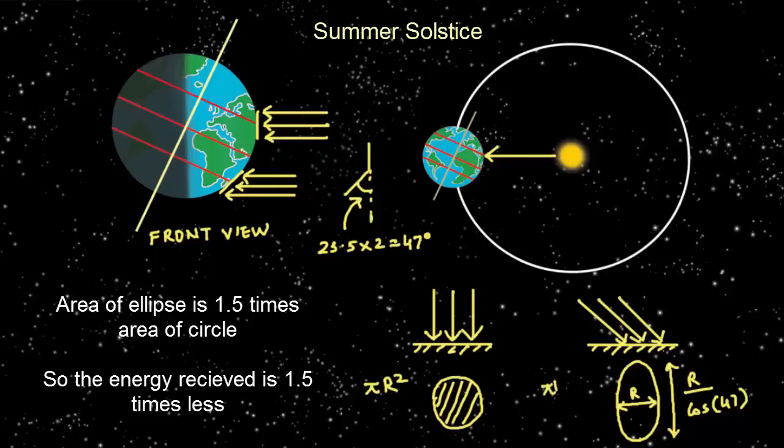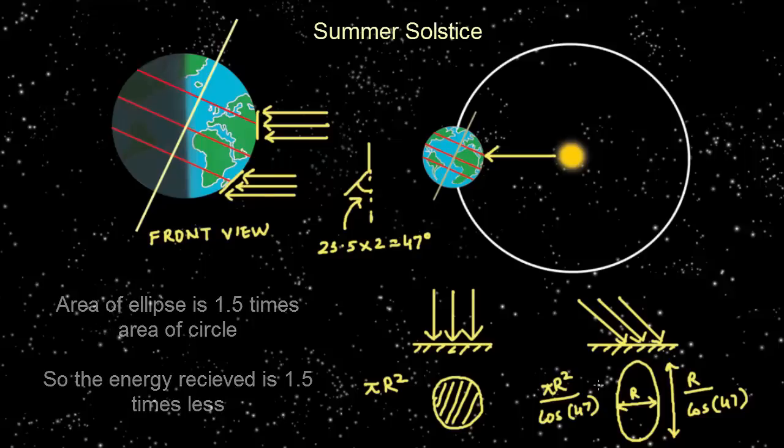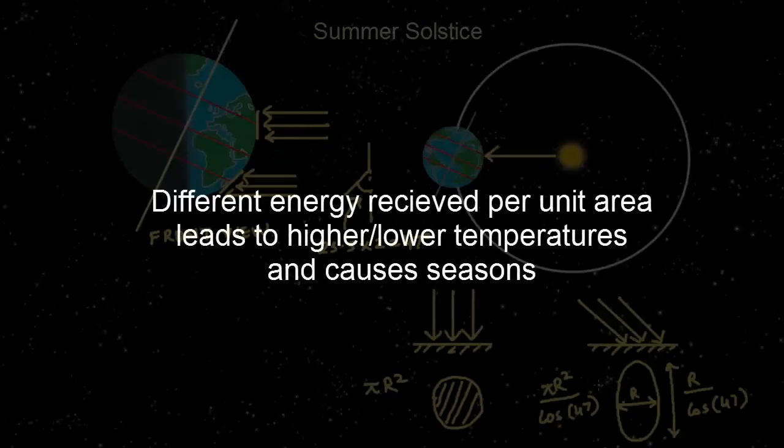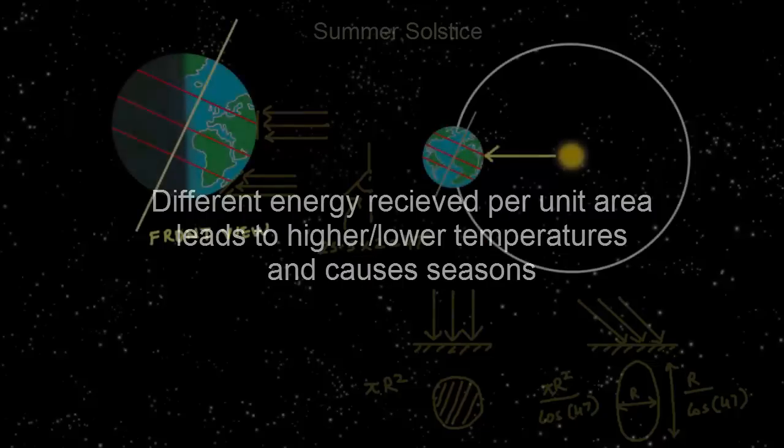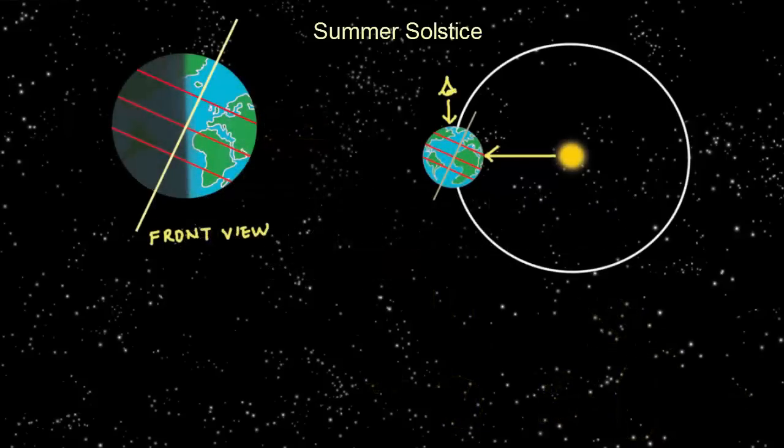Thus, the energy received in the Southern Hemisphere at the Tropic of Capricorn is 1.5 times less than the energy received at the Tropic of Cancer. This difference in received energy per unit area leads to higher and lower temperatures, and this is the real cause of seasons.